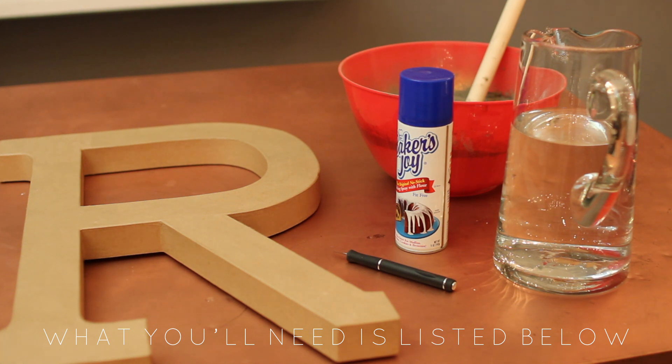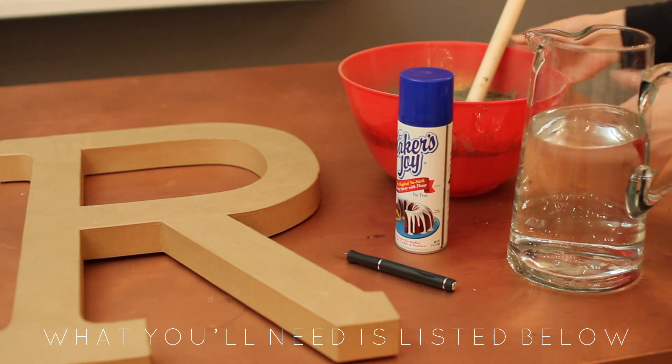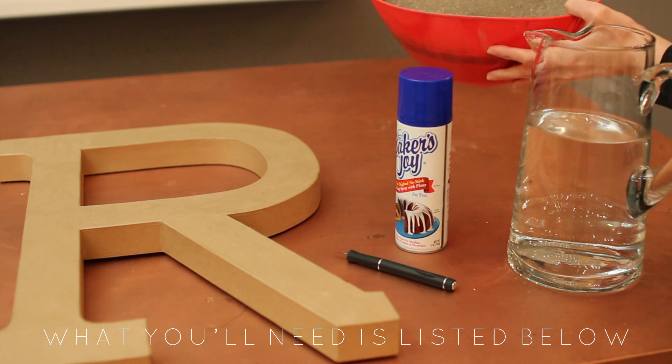I picked up a jumbo R from Joanne's, some water, baking spray, Quikrete 5000, and an X-Acto knife.